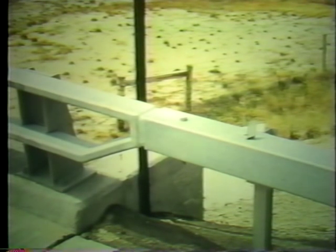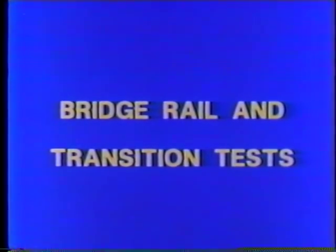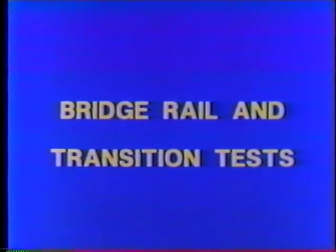Unique transitions such as this box beam to a bridge rail can be accomplished with specially manufactured transitions. This installation has all the best features of proper end anchorage — the blocked-out anchor protects the corner and provides a smooth transition, with strength provided and the tapered end section eliminating wheel snagging. These series of tests were run to determine the safety of bridge railings and W-beam transitions into bridge rails. Test specifications were a full-size sedan traveling at 60 miles per hour, hitting the railing at a 25-degree angle.